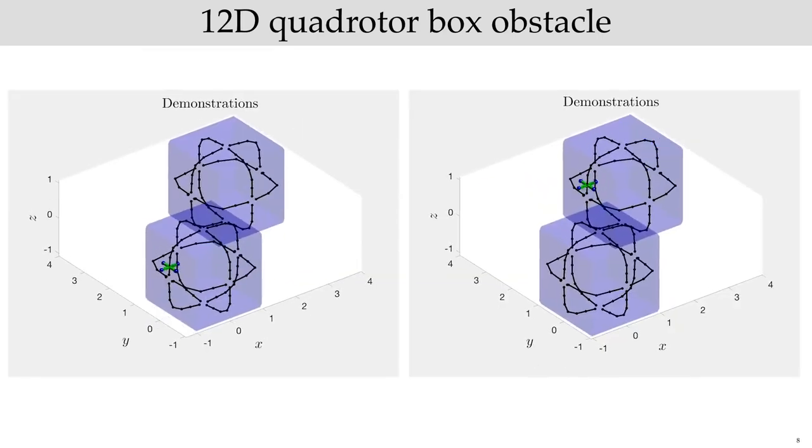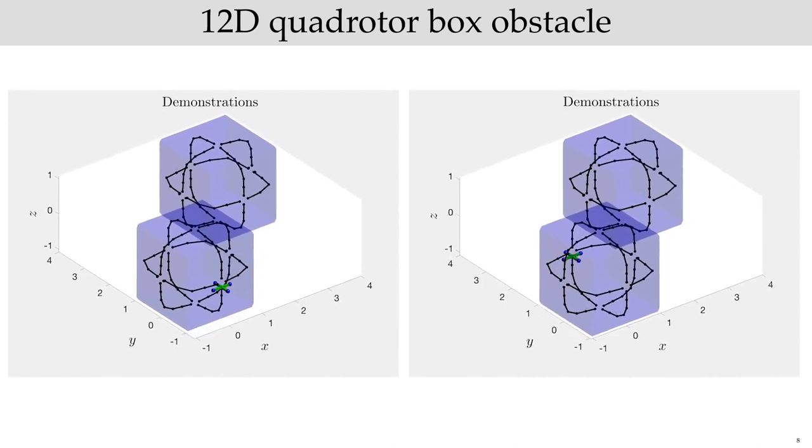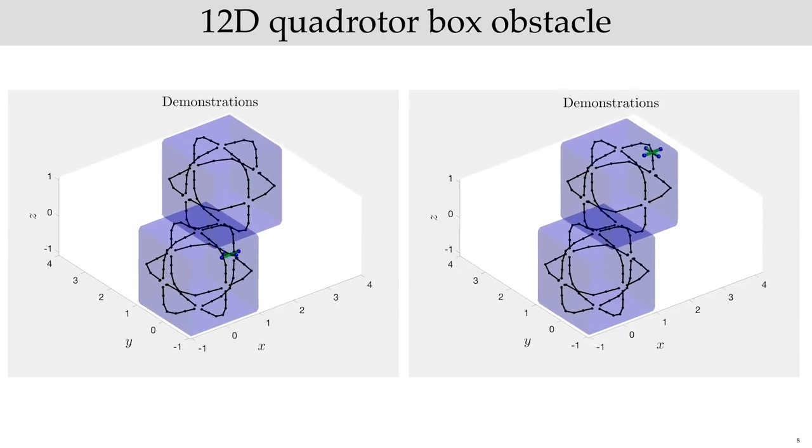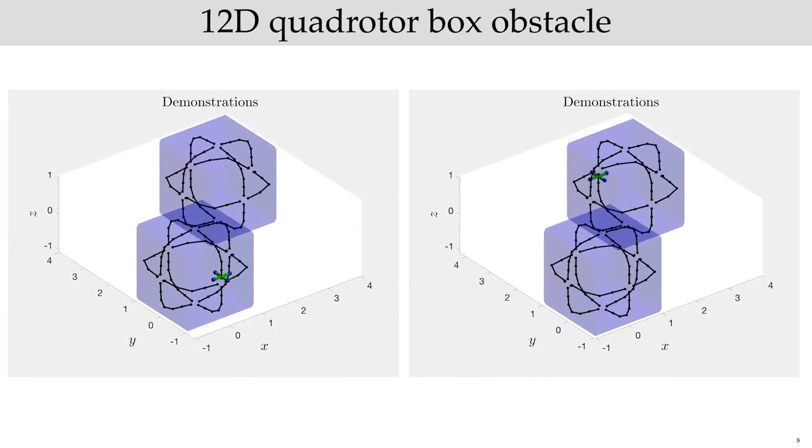Here, we learn an obstacle represented as a union of two boxes to be learned from 24 short demonstrations on the quadrotor. When given the parametrization, previous constraint learning approaches can learn the constraint exactly.